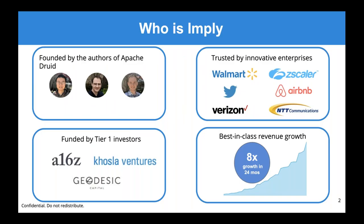Just so you know a little bit about Imply — it was started by the creators of Apache Druid out of a company called Metamarkets a long time ago. Since then, the technology was turned into open source and became a top-level Apache Software Foundation project as Apache Druid. The founders went on to create Imply as a company, funded by Andreessen Horowitz, Coastal Ventures, and more recently Geodesic. The business has been booming.